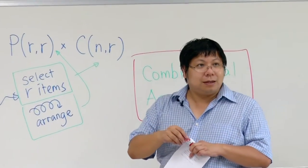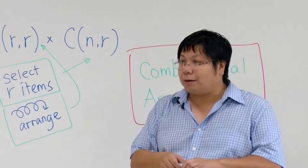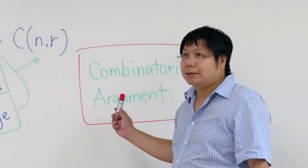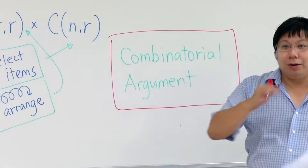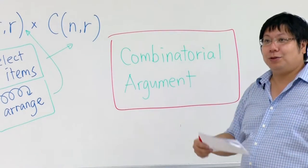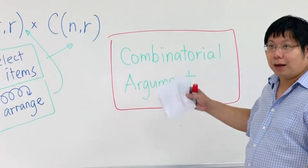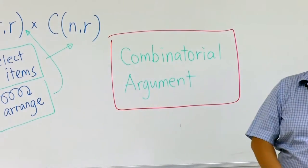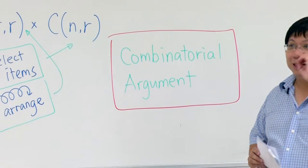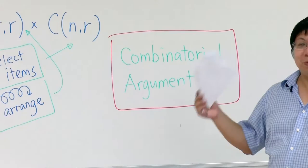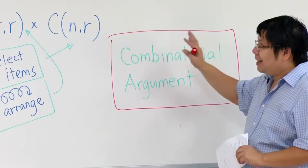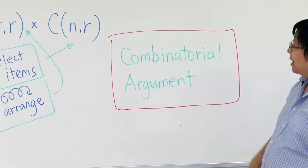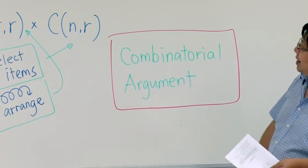We call this combinatorial arguments. We are not using any formulas but we can still prove things to be correct. It is always good to have a combinatorial argument because it saves time to verify equations and check for mistakes. It is a formal way of proving things. Later in the course, some assignment problems will ask you to provide a proof in this form. If you write down the formula instead, it is going to be zero marks.